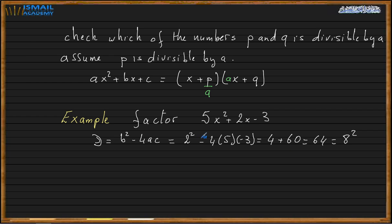Now for the second step, I multiply 5 by 3. So I will factor x squared plus 2x minus 15 using direct factoring. I need to find two numbers whose product is minus 15 and whose sum is 2.